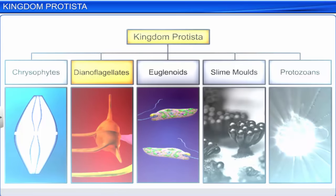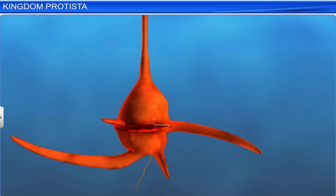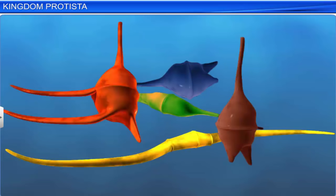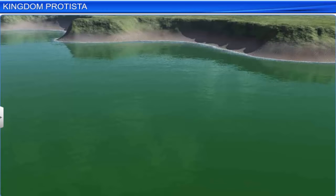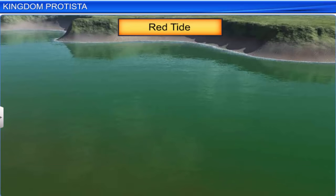Dinoflagellates are colorful protists found both in marine and freshwater. Based on the pigments in their cells, they are yellow, green, brown, blue, or red. Sometimes when a red dinoflagellate multiplies rapidly in the water, it makes the water appear red. This red tide phenomenon is known to be harmful, as the toxins released can kill other marine animals such as fish.